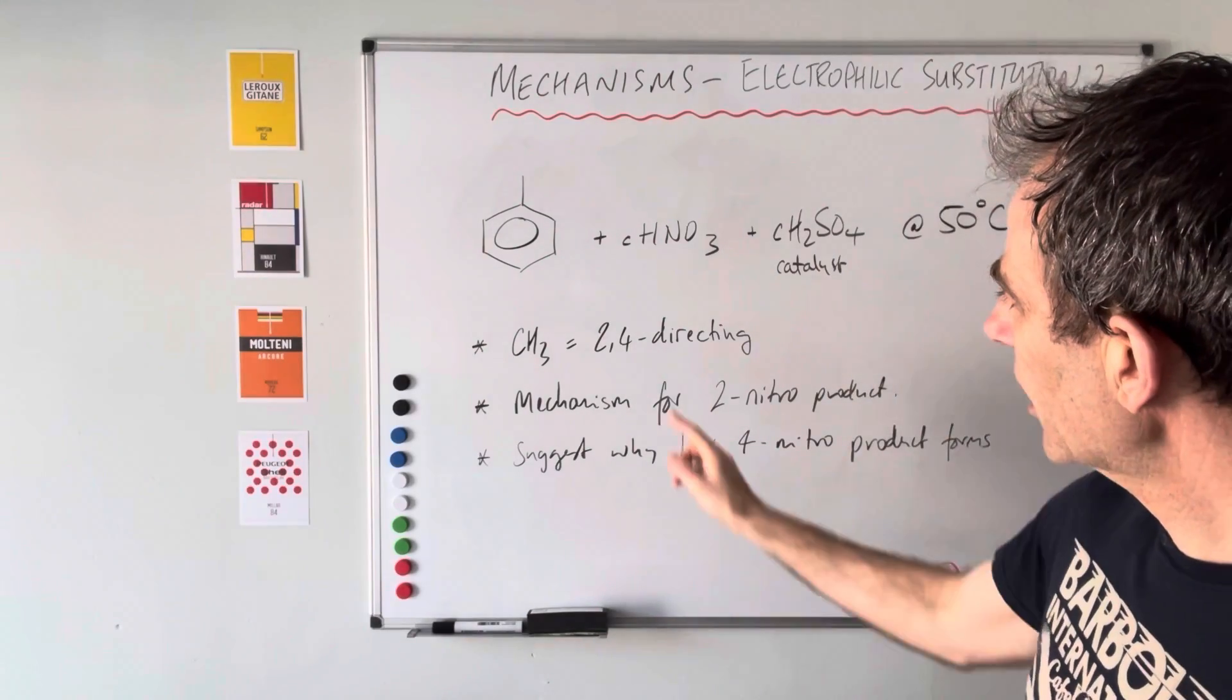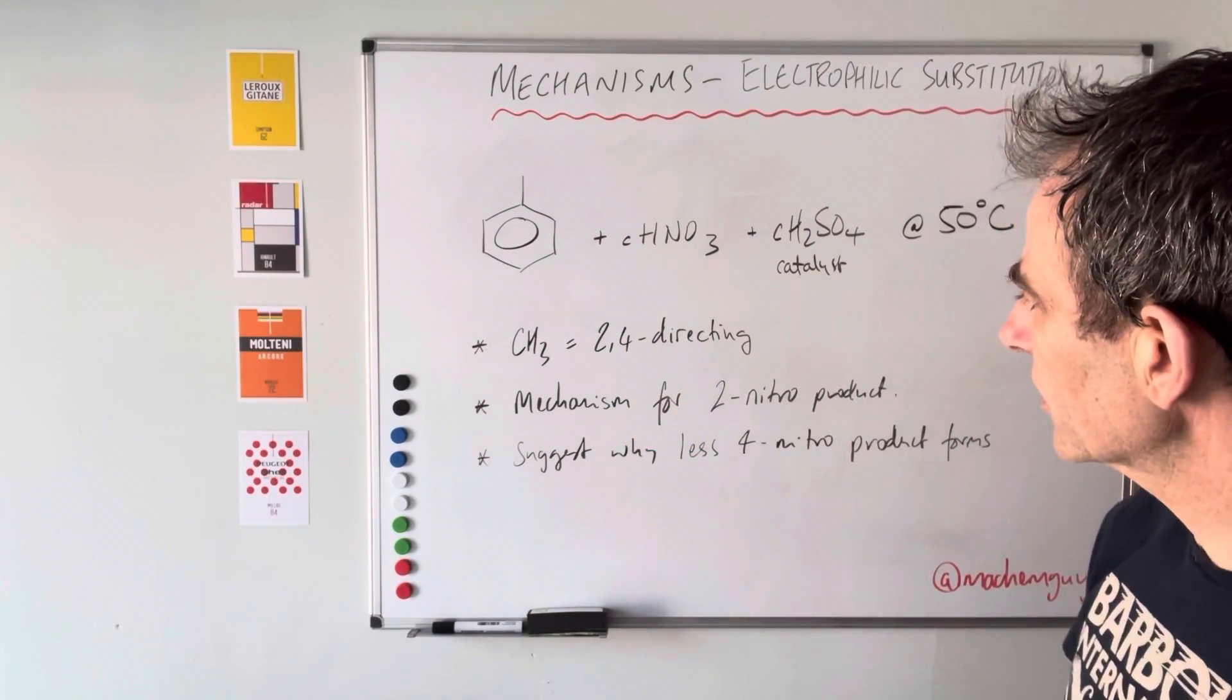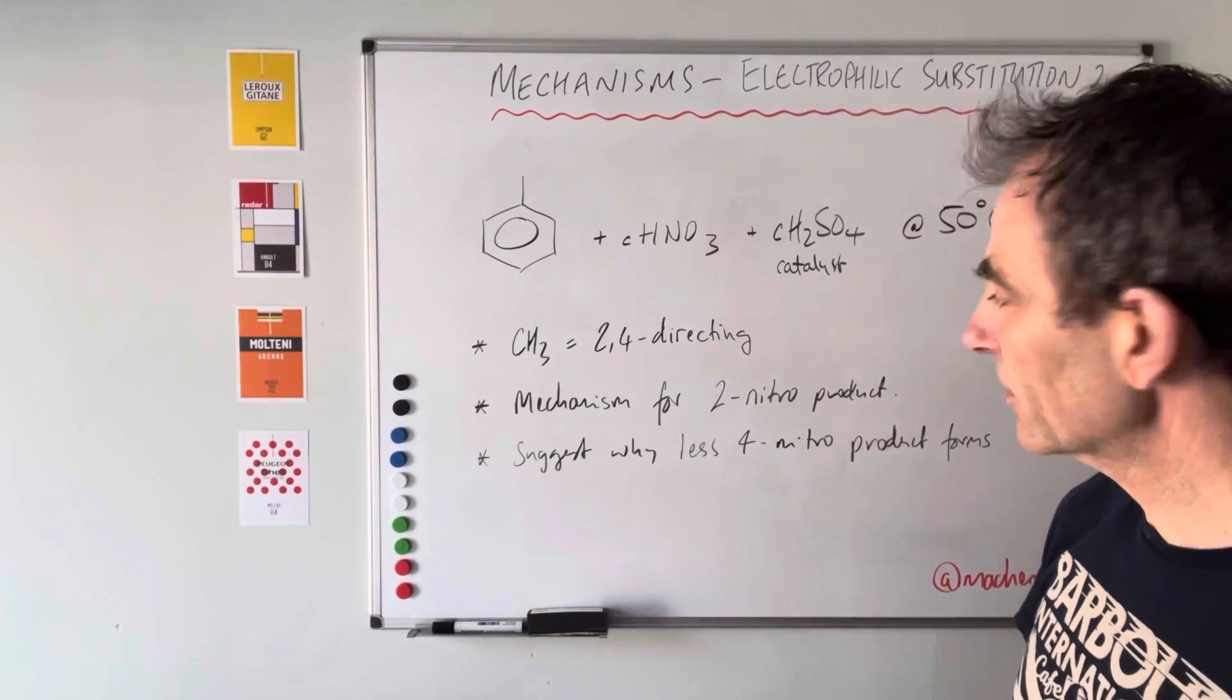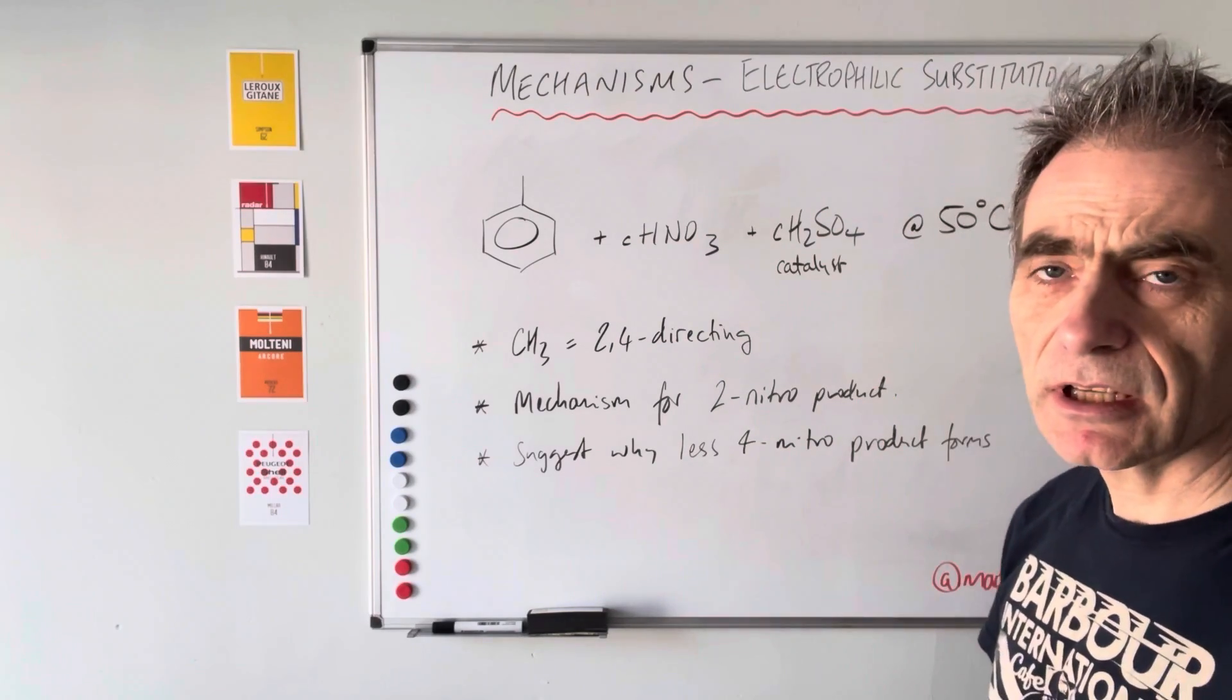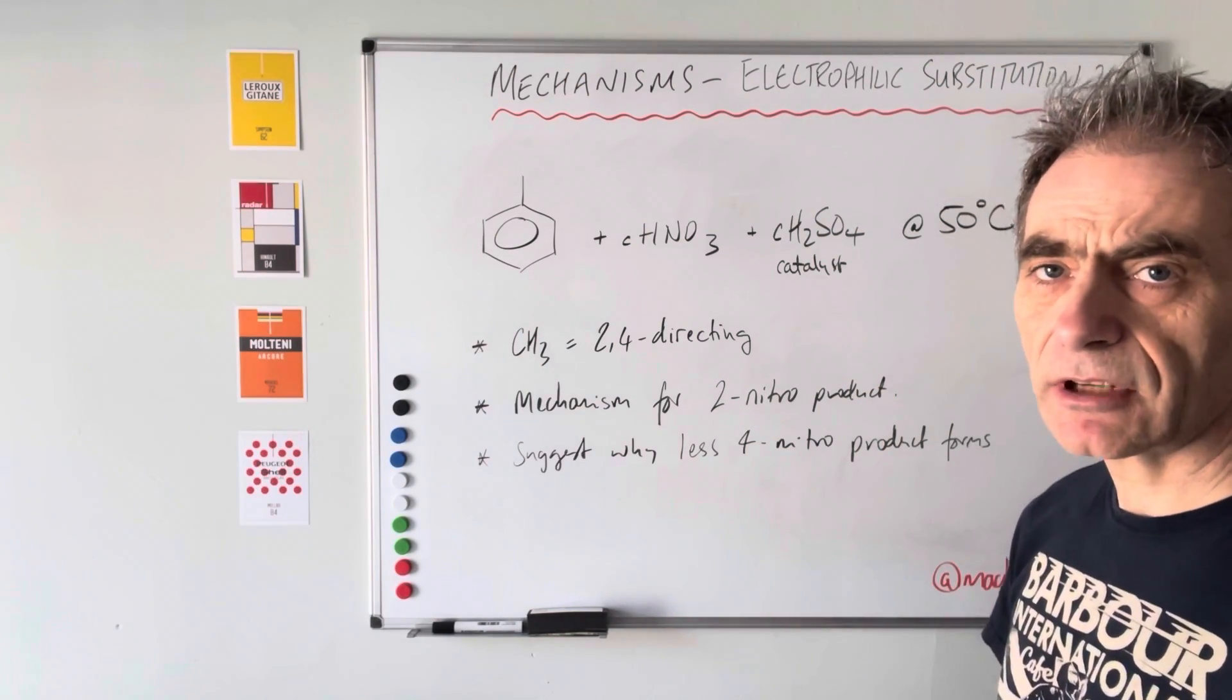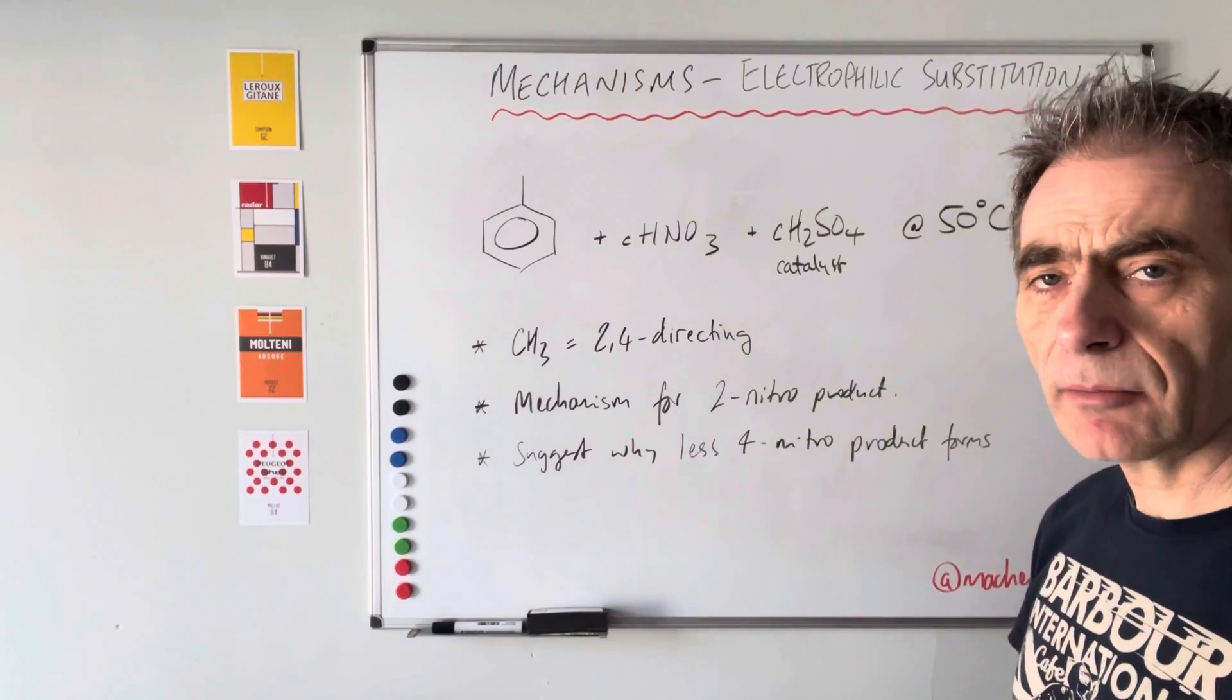We've got some information about the methyl group - it's a two-four directing group. So we're going to do the mechanism for the two nitro product and suggest why the four nitro product is produced less than the two nitro product.